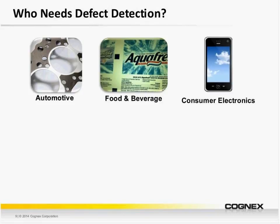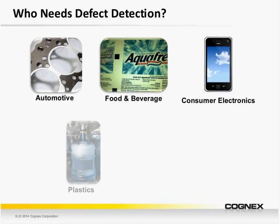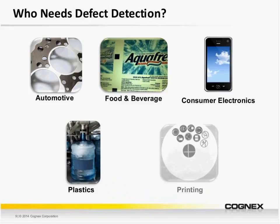The consumer electronics industry is another example where we've had success, inspecting for things such as surface defects on the casing, verifying that sonically welded parts are within spec, and inspecting for logos, etchings, and print. The plastics industry — whether blow molding, injection molding, or extrusion — we can inspect for short shot, flash, and burn marks. And the printing industry, where we can inspect print integrity both in terms of pattern and, in some scenarios, in terms of color.